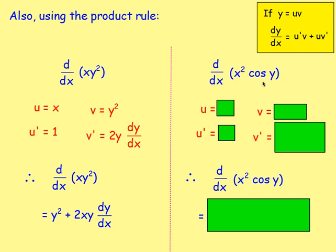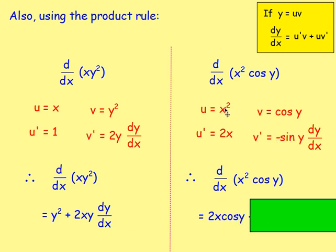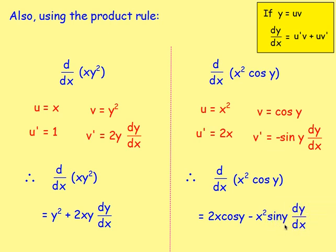If you're differentiating x squared cos y, once again you've got one function times another function, so you have to use the product rule. u is x squared, v is cos y. u' is 2x, and v' gives negative sin y dy/dx. Using the product rule — u'v plus uv' — you would get 2x cos y minus x squared sin y dy/dx.